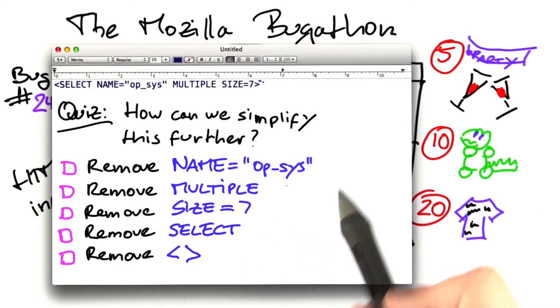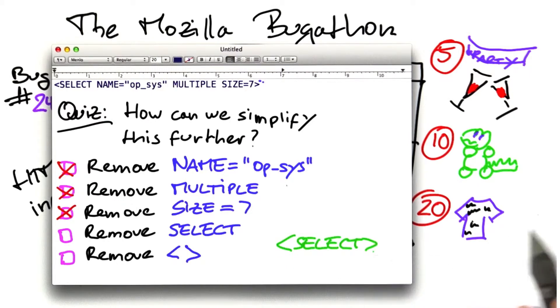Same goes for select. If we remove the attributes, that is, name equals operating system, or multiple, or size equals 7, then our input will still be a select tag with no attributes at all, and this will still trigger the original failure.